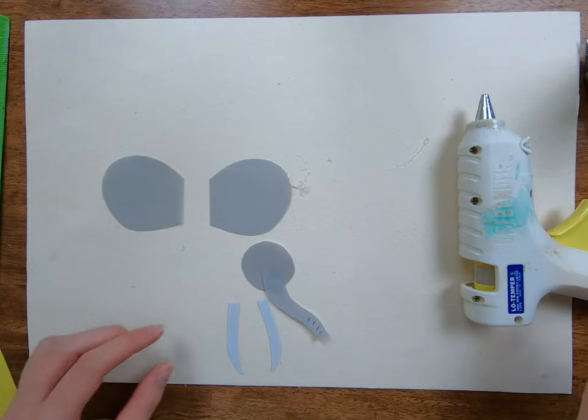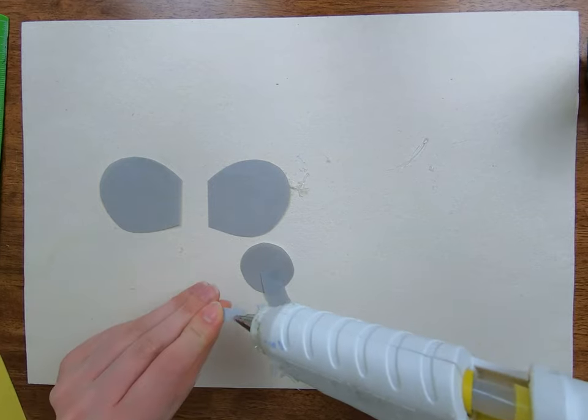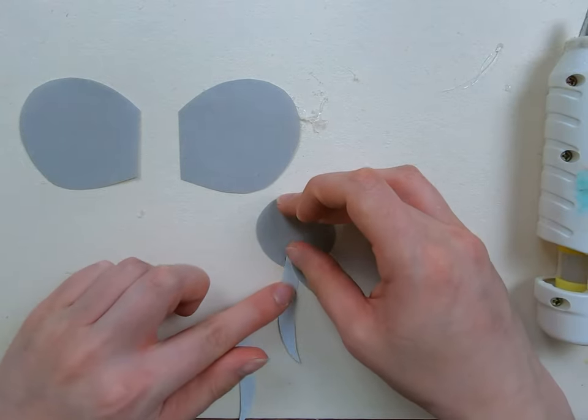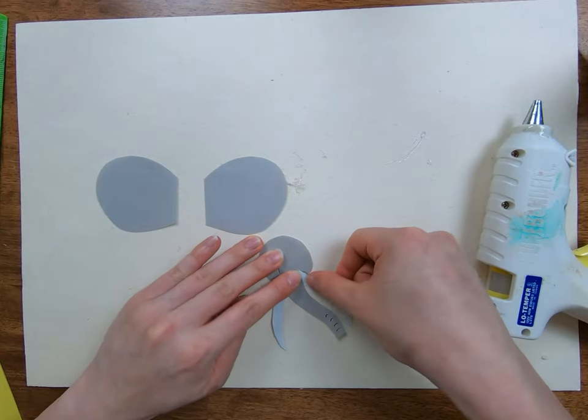And now to affix the tusks. Let's do the same thing. A little blob of glue at the top of each tusk. Now tuck the tusk a little bit underneath the trunk so it sticks out to the side. And do the same thing on the other tusk.